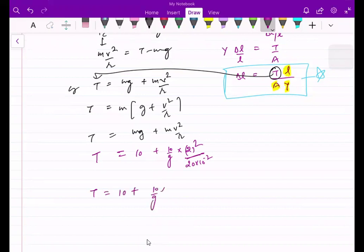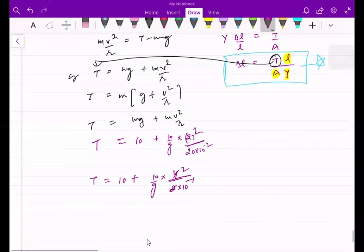This is 10 plus 10 by g times 4 divided by 2 into 10 to the minus 1, which is 4 over 20.